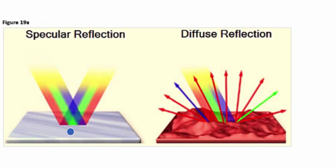It occurs with mirrors and other shiny surfaces because surface imperfections are smaller than the wavelength of the incident light. Therefore, virtually all of the light is reflected equally.